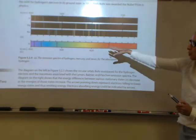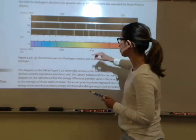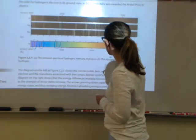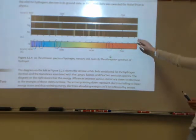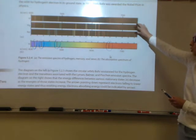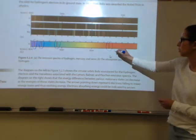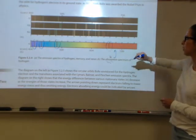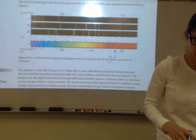A continuous spectrum shows all the different colors, except there are small dark regions interrupting the color — making it discontinuous. The emission spectra show what energy is being given off, whereas the absorption spectrum shows at what wavelengths energy is being absorbed.